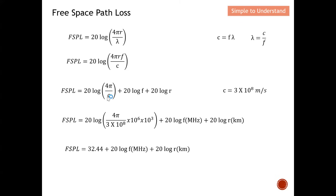Here, c is the speed of propagation of the electromagnetic wave, which we take as the speed of light: 3 times 10 to the power of 8 meters per second. This is a known number. Substituting all the known values on the left side into a calculator gives 32.44. This is a fixed constant. The equation then includes terms 10 to the power of 6 and 10 to the power of 3.